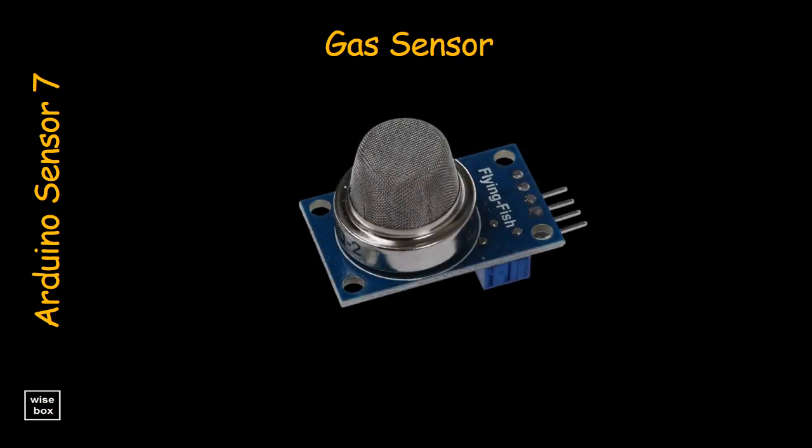The MQ2 gas sensor is a sensor which detects gas and smoke with concentration between 300 parts per million and 10,000 parts per million. It can detect butane, propane, methane, alcohol, hydrogen, and smoke. It can be only used indoors at ambient temperature.